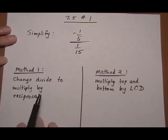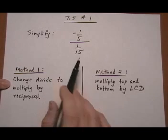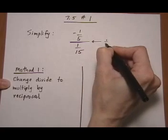I'm going to show you two different methods to do it. When you have a complex fraction like that, one method is to think of this fraction bar as a division symbol.